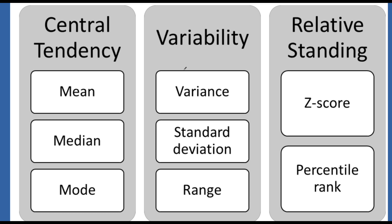Let's take a quick look now at descriptive statistics and the different tools that are available for you. Basically you have three types of tools: tools that measure central tendency, tools that measure variability, and tools that measure relative standing. When you're looking at an individual variable versus a relationship between variables, you're going to have different tools.